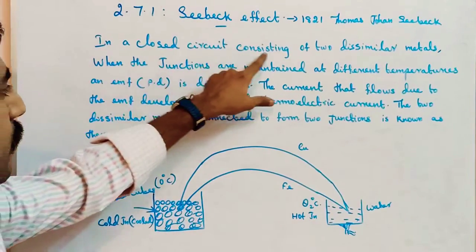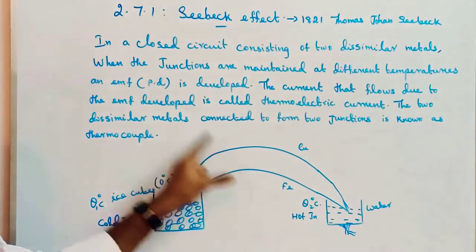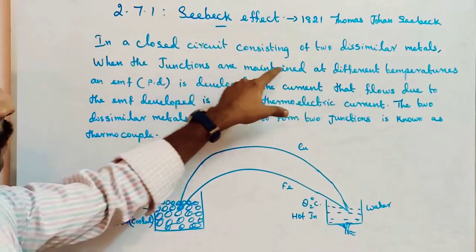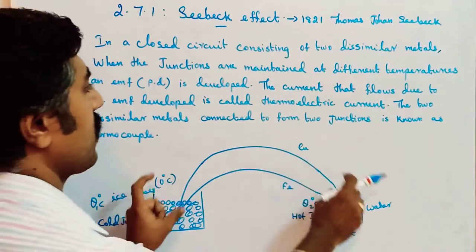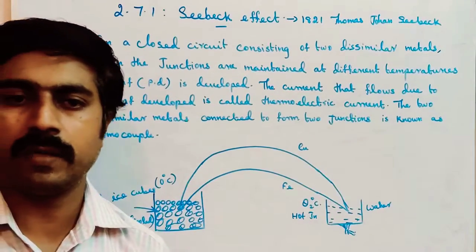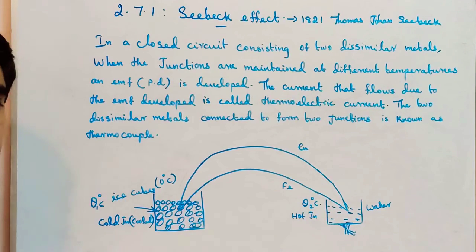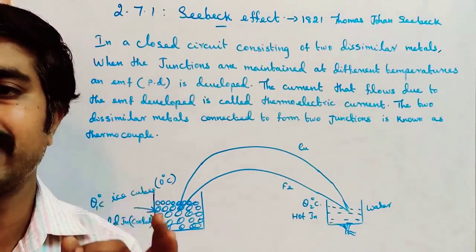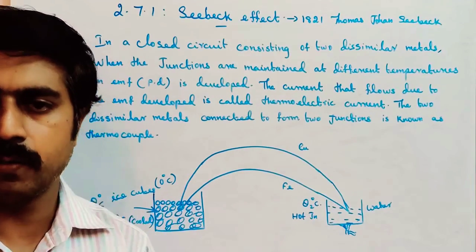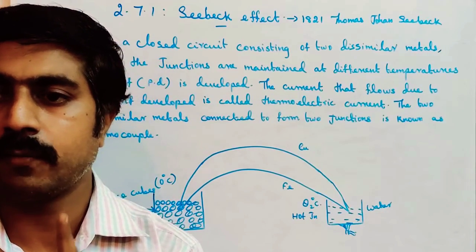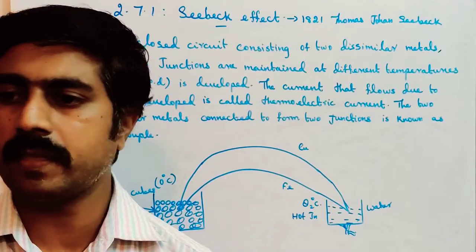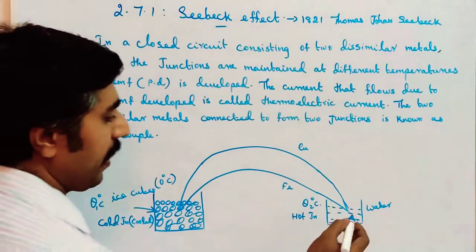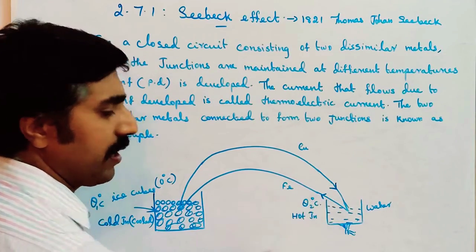In a closed circuit consisting of two dissimilar metals, when the junctions are maintained at different temperatures, an EMF is developed. This potential difference is produced due to the two different temperatures. If a potential difference is produced, current flows. At the hot junction, current flows from copper to ferrous, because copper is a better conductor.